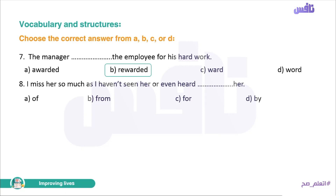Number eight. 'I miss her so much as I haven't seen her or even heard from her' — meaning I have not received any messages from her at all.